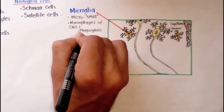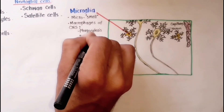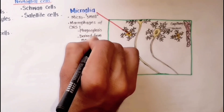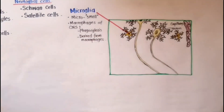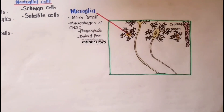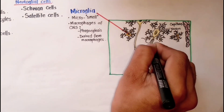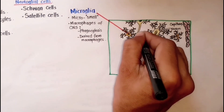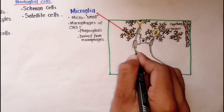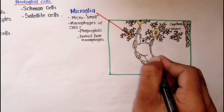Microglial cells are also called the macrophages of the CNS because they phagocytose bacterial cells and cellular debris. Like macrophages, they are also derived from monocytes that migrate from the blood into the nervous system before birth.